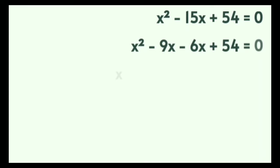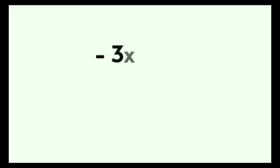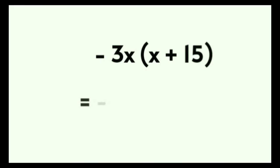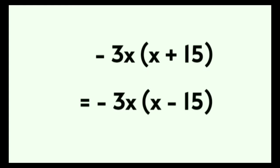Before moving to the second step, here is one very important rule: whenever there is a minus sign outside a bracket, the signs inside the bracket will change. For example, minus 3x in bracket x plus 15 — in the next step x plus 15 becomes x minus 15. So the result is minus 3x in bracket x minus 15. This logic will be applied in the second step.